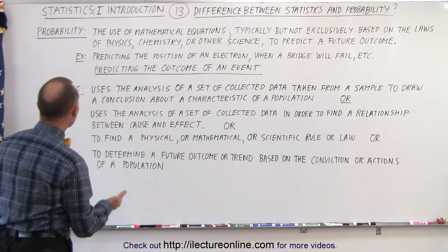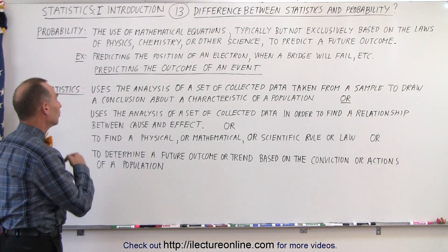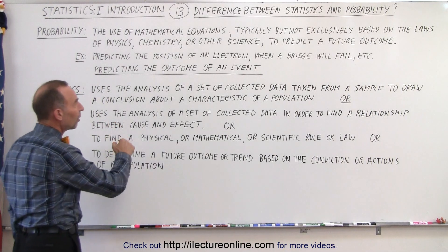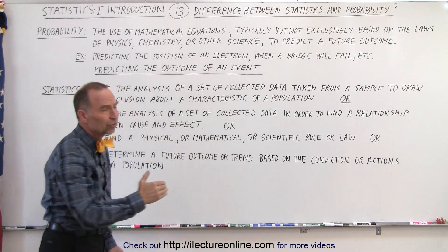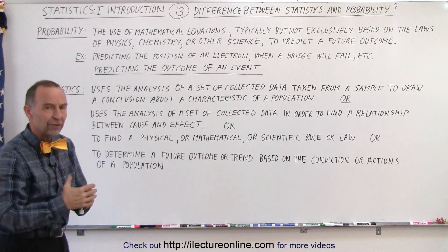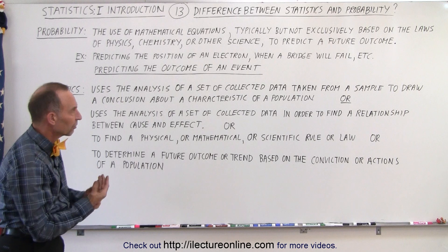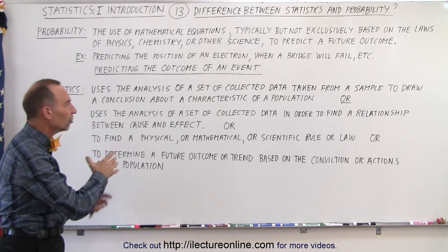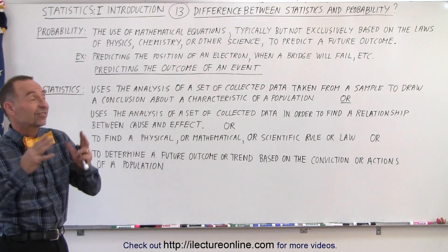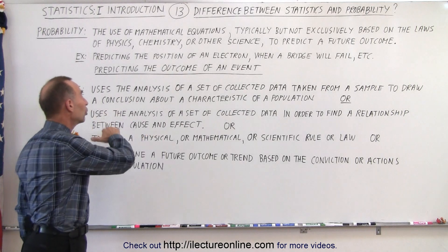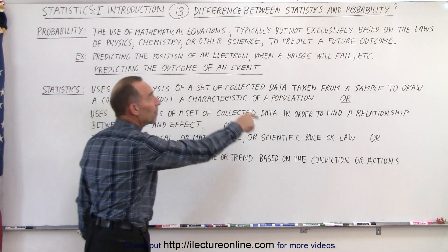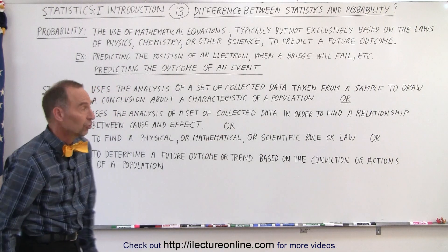Now opposed to that is statistics. In statistics we use the analysis of a set of collected data. So we're not going to laws of physics or laws of chemistry or laws of engineering. We go to the analysis of a set of collected data taken from a sample to draw a conclusion about a characteristic of a population. That's one definition.